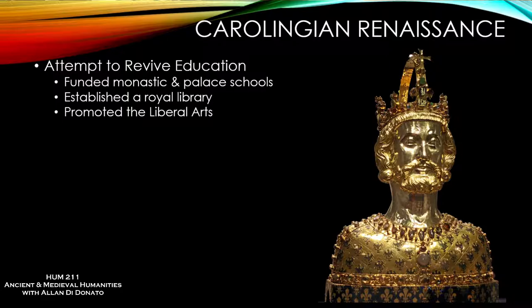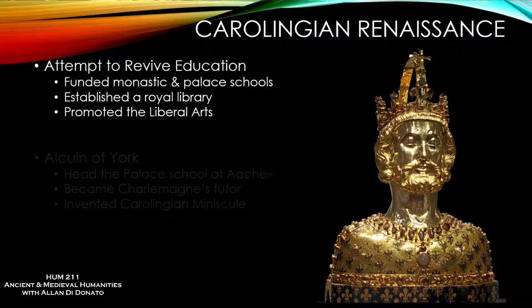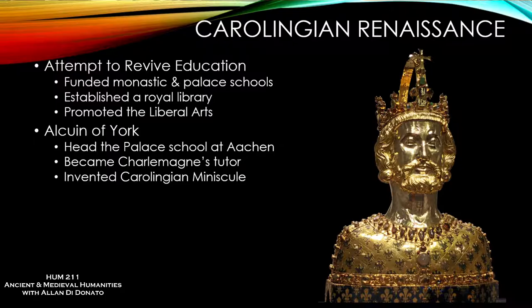Charlemagne funded monastic and palace schools throughout the empire. He was a lover of books, founded a royal library, and promoted the liberal arts — a revival in literacy, literature, art, and architecture. Charlemagne himself became educated as he progressed, learning to read fairly late in life. He was fluent in Latin and read a little Greek. He never quite mastered writing but tried to learn. One of the men he hired to head up the palace school was a monk from York known as Alcuin — Alcuin of York — probably the most famous figure to come out of the Carolingian Renaissance.